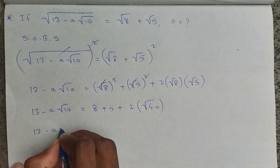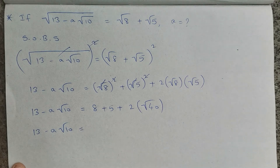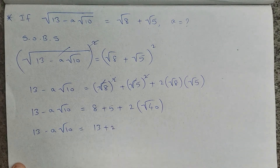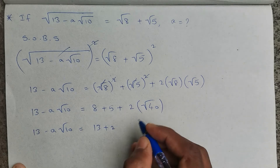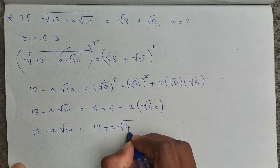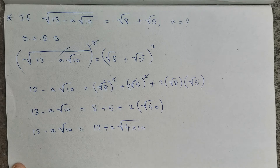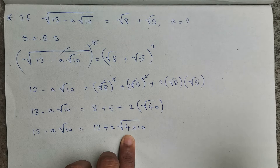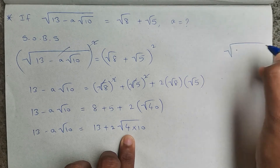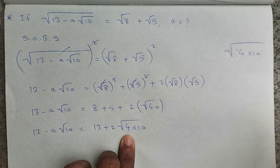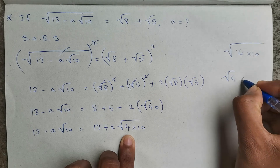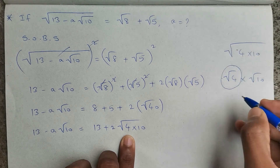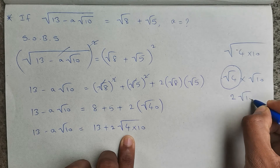So 13 − a√10 = 8 + 5 + 2√40, which equals 13 + 2√40. Now √40 can be written as √(4 × 10). Splitting it: √4 · √10, and since √4 = 2, this gives 2√10.